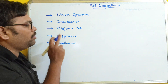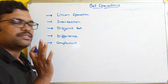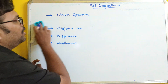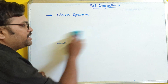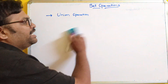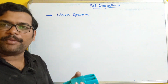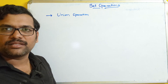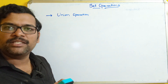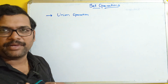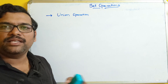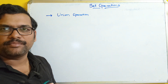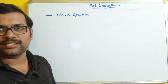So union, intersection, disjoint, difference, and complement — these are all the different operations we can perform on a set. Coming to the definition of a set: a set is a comma-separated collection of elements enclosed in curly braces. We can call them elements or objects. One important thing is that only unique elements are considered — there are no duplications.